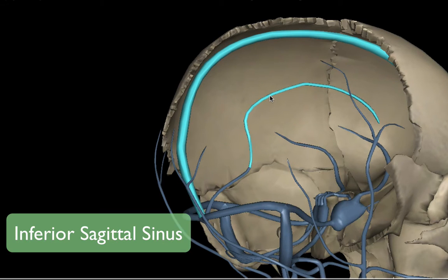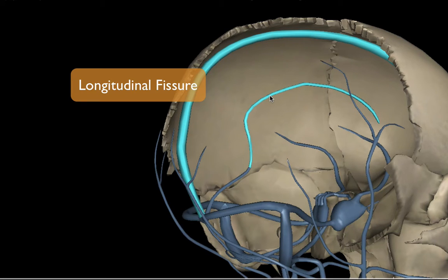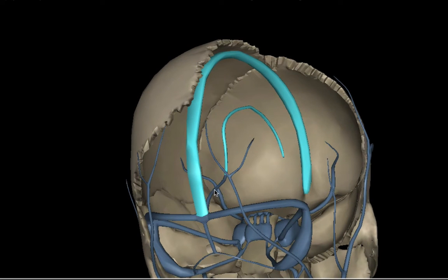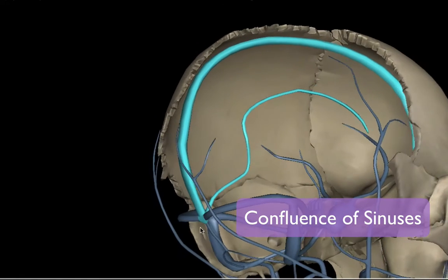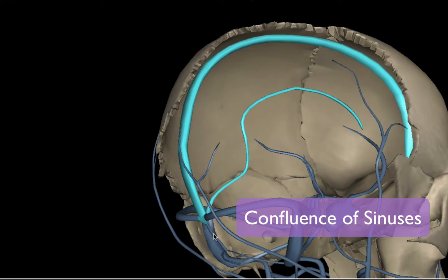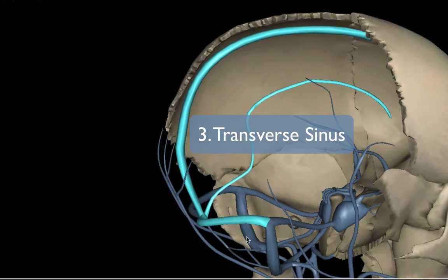The inferior sagittal sinus drains a deep portion of the longitudinal fissure — the feature in the brain that basically cuts it into two hemispheres. Notice how the superior sagittal sinus and inferior sagittal sinus meet at the confluence of sinuses, where they become the transverse sinus.